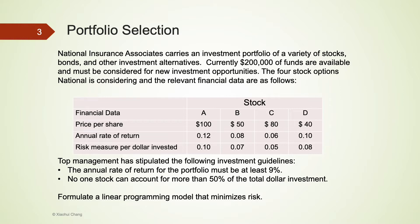In this example, there are four stocks: A, B, C, and D. The management has stipulated the following investment guidelines. The annual rate of return for the portfolio must be at least 9%. No one stock can account for more than 50% of the total dollar investment, which appears to be for diversification purposes.